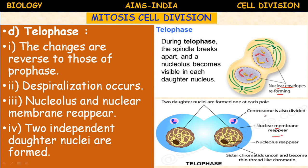The centrosome is also divided and then disappears. The nucleolus reappears and the nuclear membrane reappears. The sister chromatids uncoil and become thin thread-like chromatin, which is surrounded by the nuclear membrane. Whatever changes we see in telophase are exactly opposite to those of prophase.